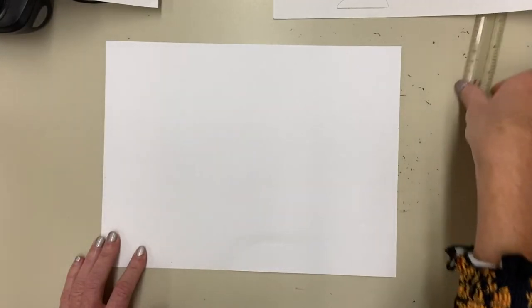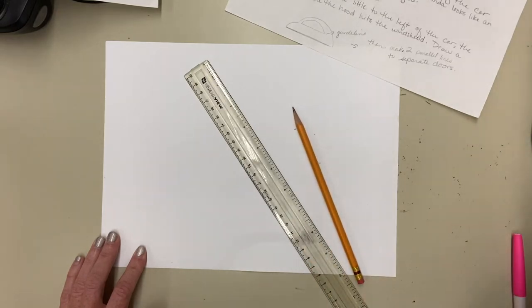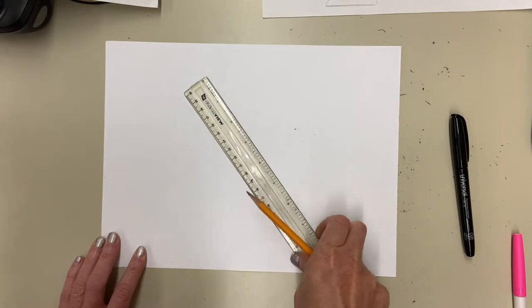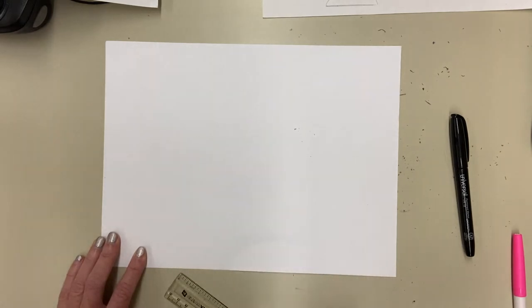All right so the supplies that I'm going to need for this basic drawing are just a ruler, a pencil, an eraser, and a sharpie. And I'm going to draw this with pencil first because there are some lines when you're drawing this that you will have to erase.